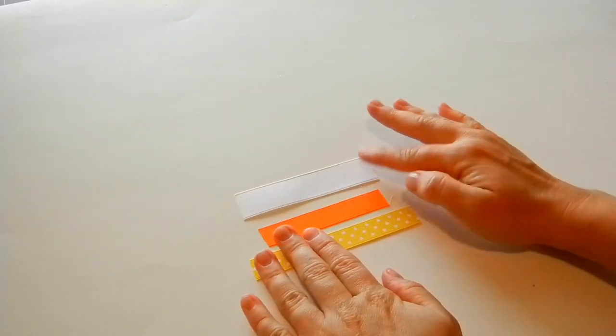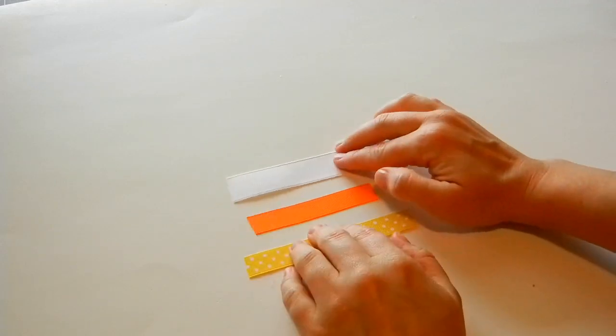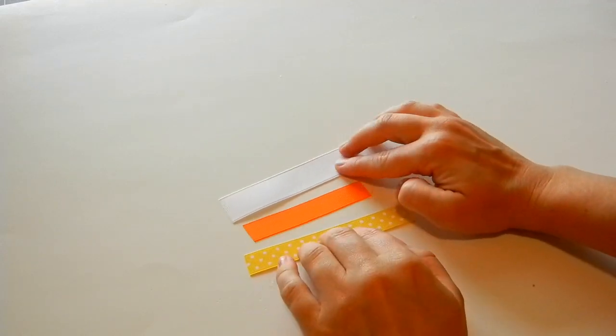Cut your ribbon out. I've got white, orange, and yellow, and this is going to be for the candy corn part.